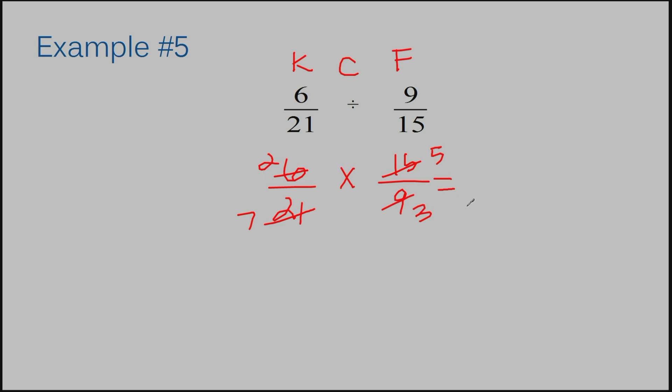So now I'm going to multiply with these numbers instead of the old numbers because that's easier to work with. Basically what I ended up doing to get this is dividing all the numbers by 3. 2 times 5 is 10, 7 times 3 is 21. This is already in my simplest form. There's nothing that can go into both 10 and 21. So my answer to example number 5 is 10 over 21.